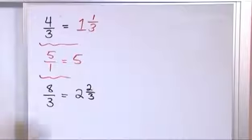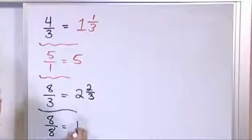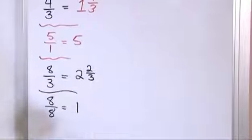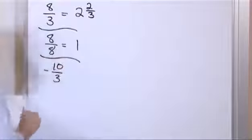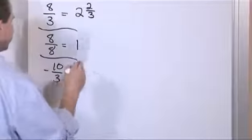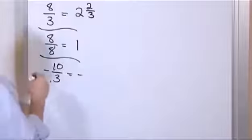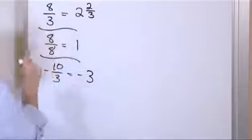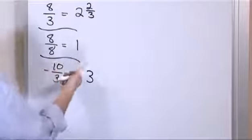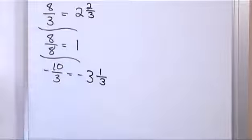What about eight over eight? Eight divided by eight is one, with no remainder, so there's no fraction to add. What if I have negative ten divided by three? Don't worry about the negative sign — just put it out in front. How many times can three go into ten? Three times three is nine, three times four is twelve — too many. So it goes three whole times. Ten minus nine gives a remainder of one out of three. So the answer is negative three and a third.